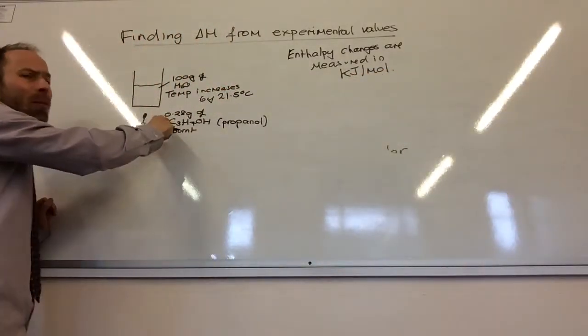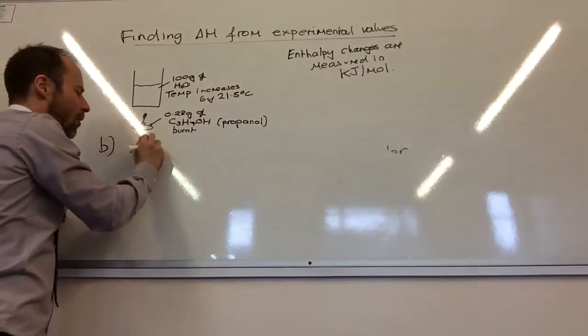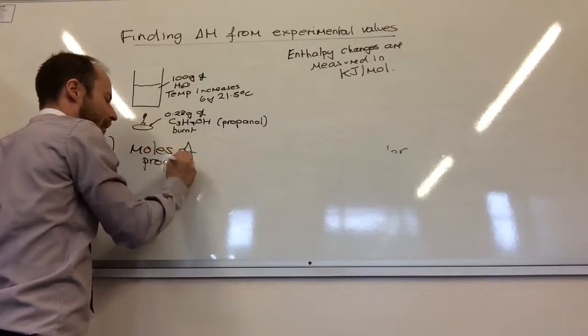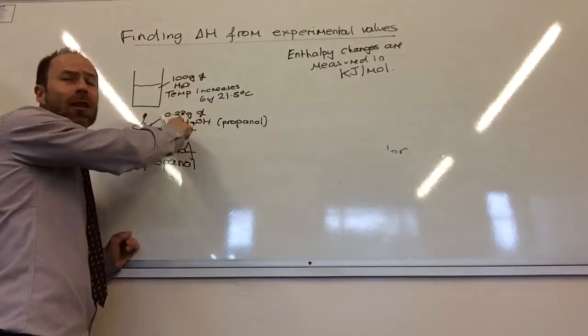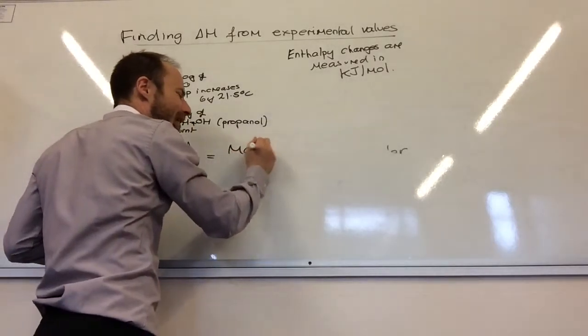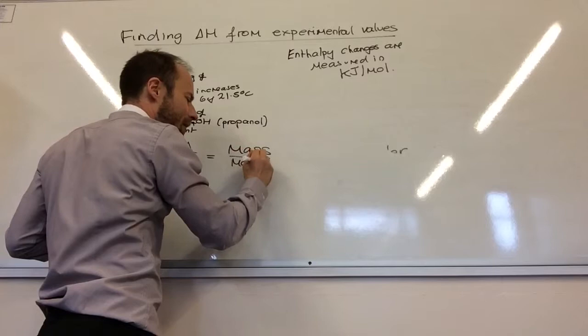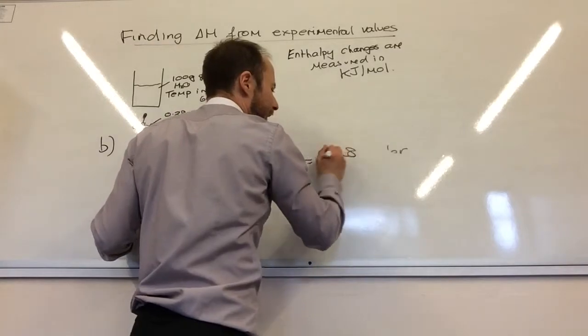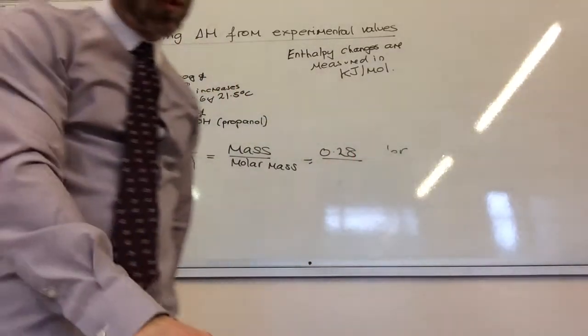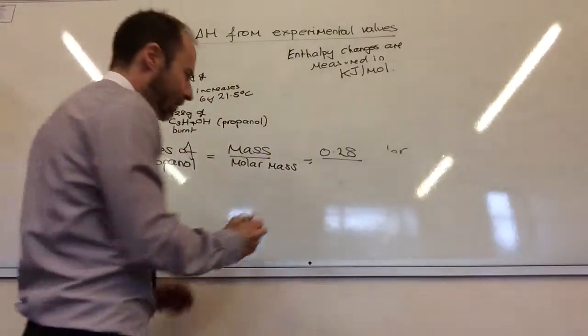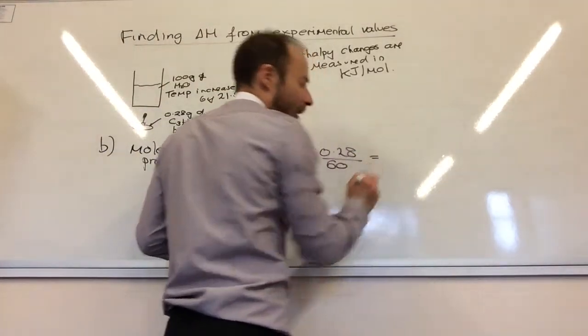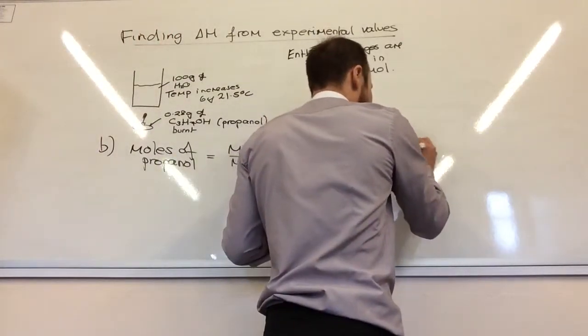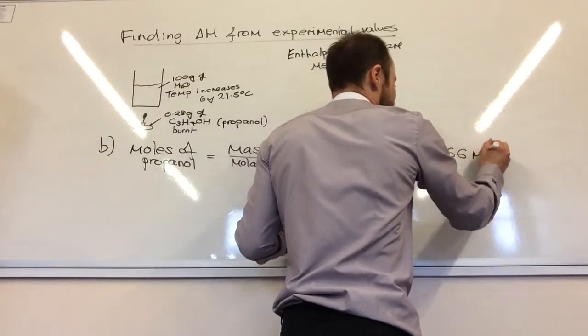I now need to find the number of moles that you burn. Moles of propanol. What are we finding? The moles of propanol that I used. Moles, we remember, is mass over molar mass. The mass of fuel that I've burned is 0.28 grams. The molar mass of propanol is 60. And that equals 0.00466 moles.